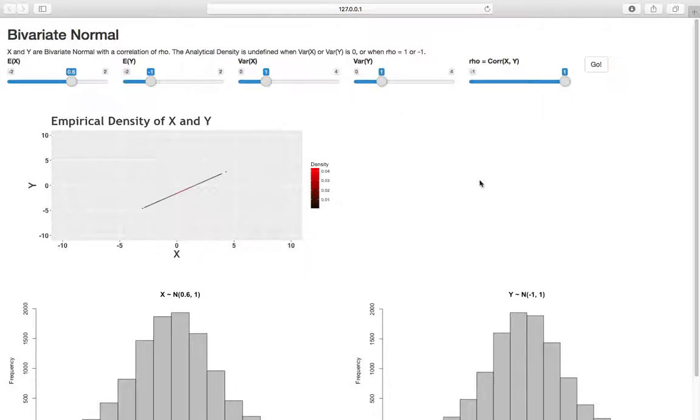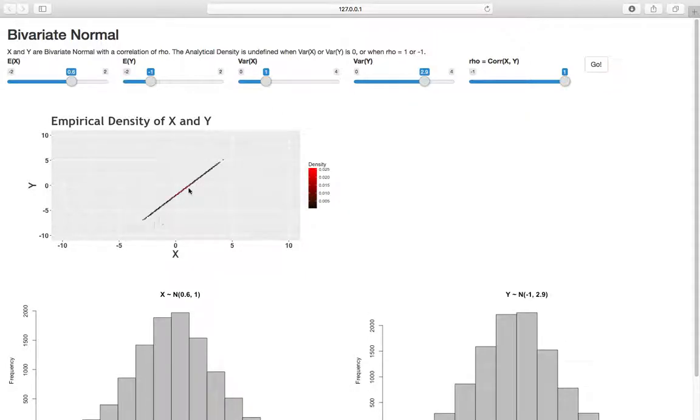And I could flip the line. I could have it go in the opposite direction if I have a positive correlation. Even if I change the variance, the line is going to change, but it's still a one-to-one line.